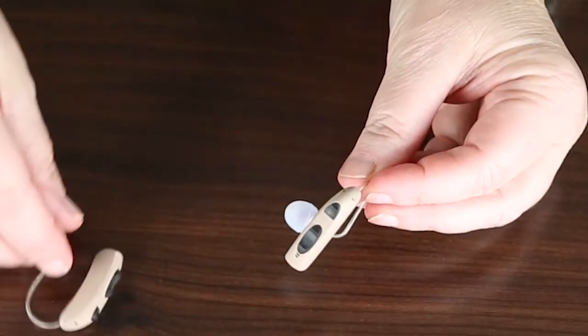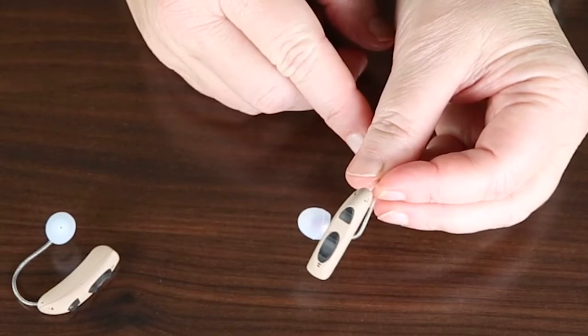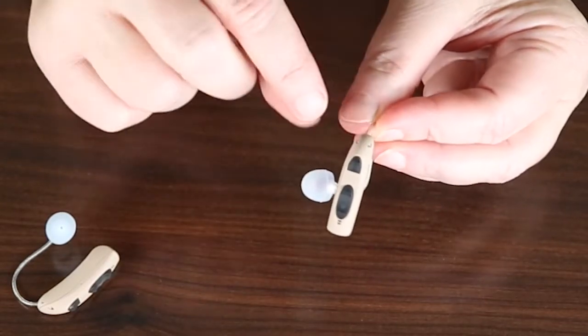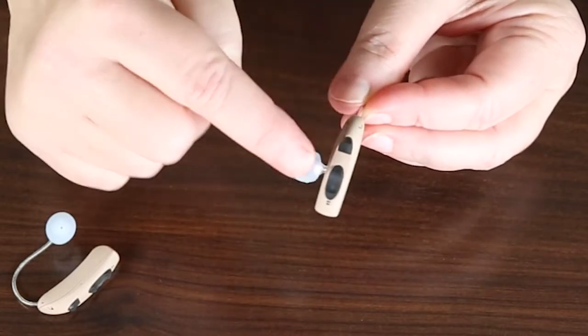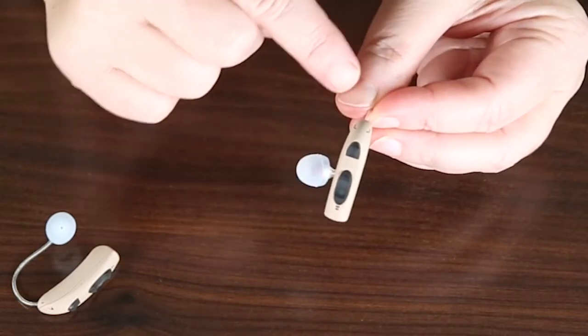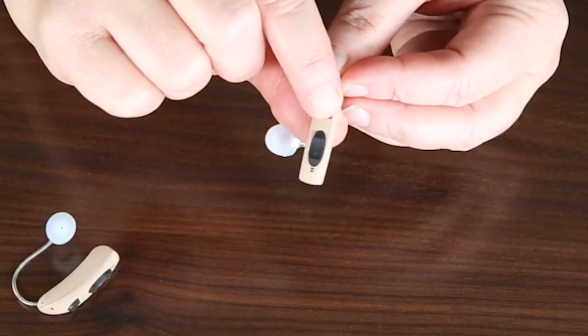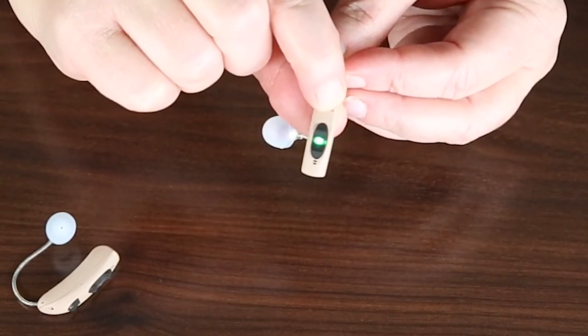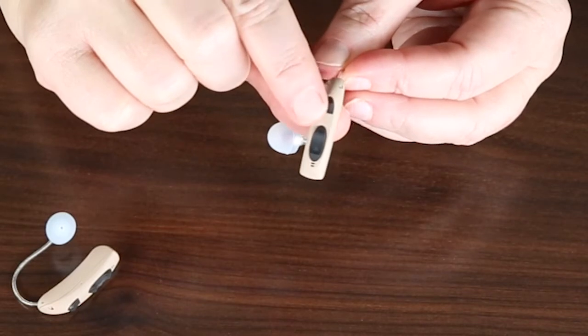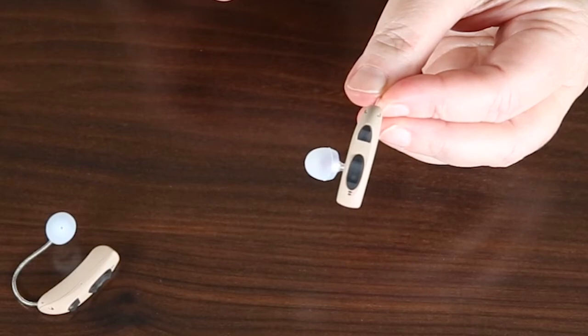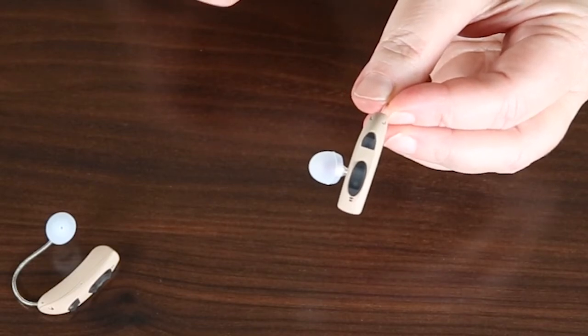The hearing aids themselves feature buttons on the back of the device. You have a power button and you have volume up and down. To access the power button and turn the hearing aid on, you will press and hold for three seconds. At this point you will see a green light. The green light indicates the hearing aid is on.